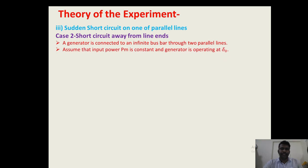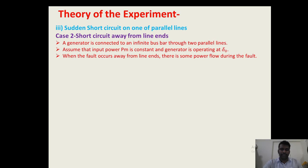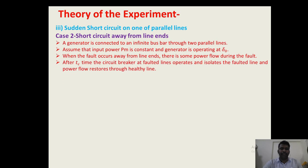We will assume the mechanical power input to the generator is constant, and initially the generator is operating at initial power angle delta_0. When the fault occurs, the power flow through the transmission line is not equal to zero. After the fault is cleared and circuit breakers operated, the faulted line is isolated from the system and power flow is again restored through the healthy line.